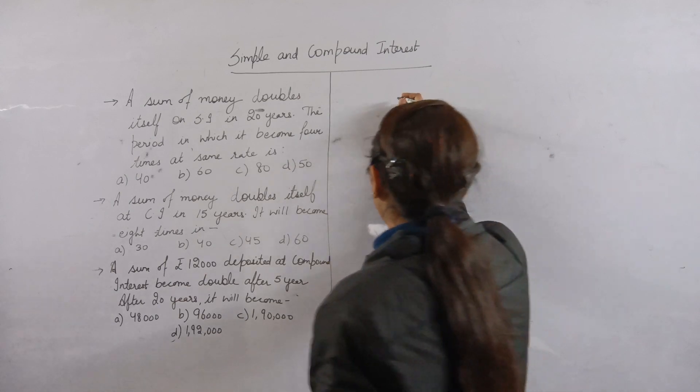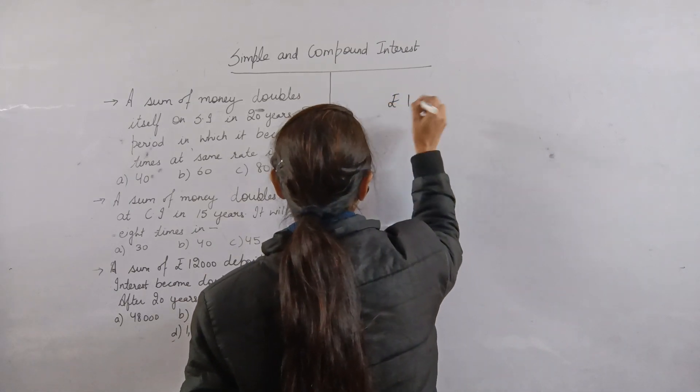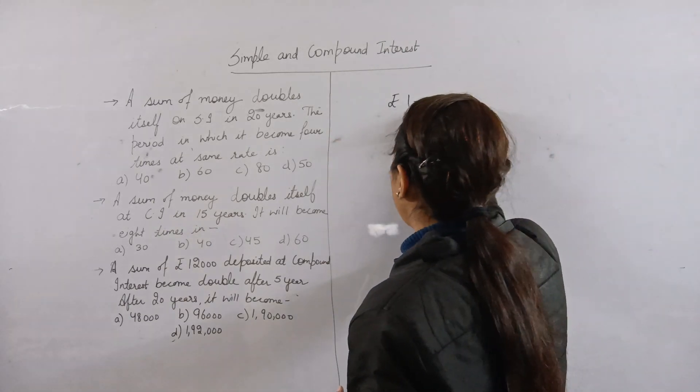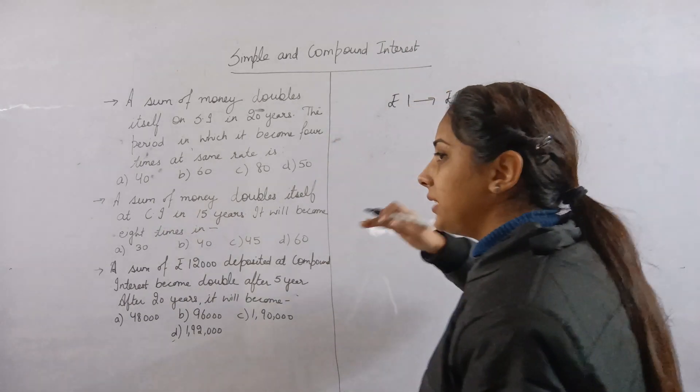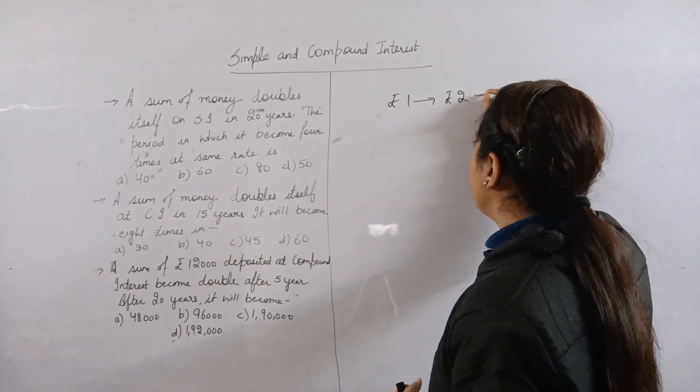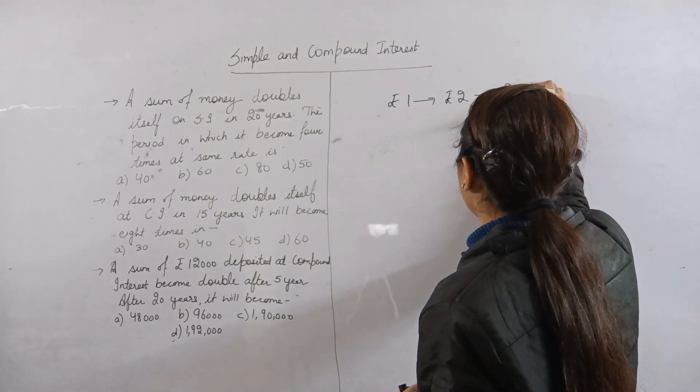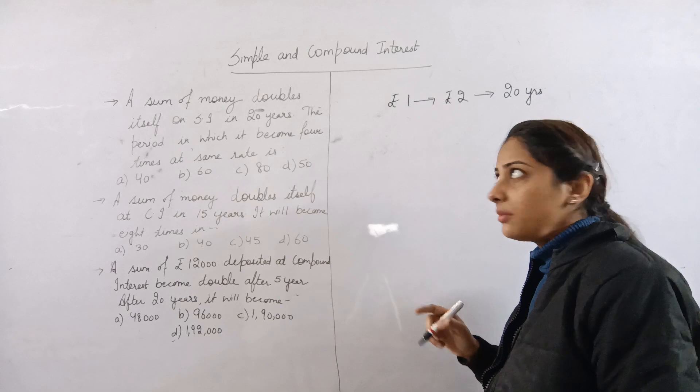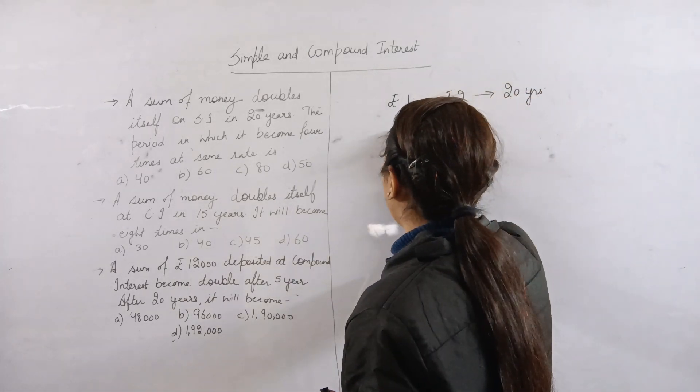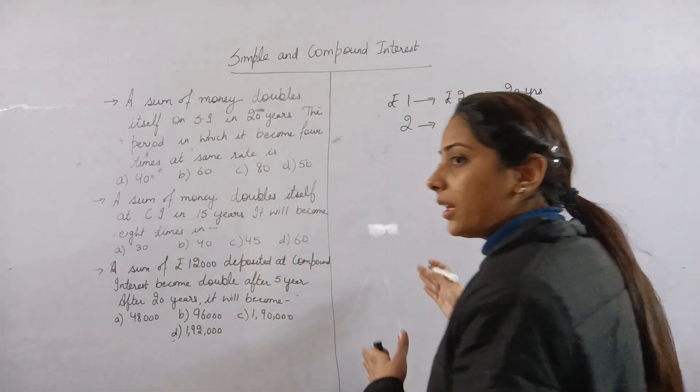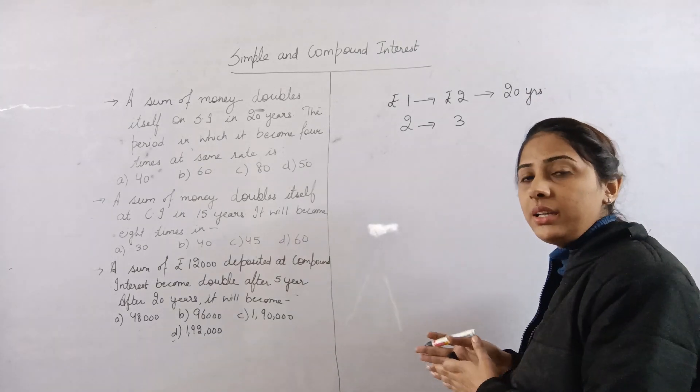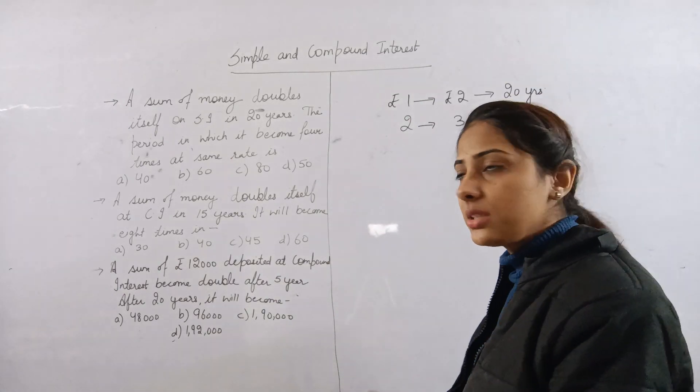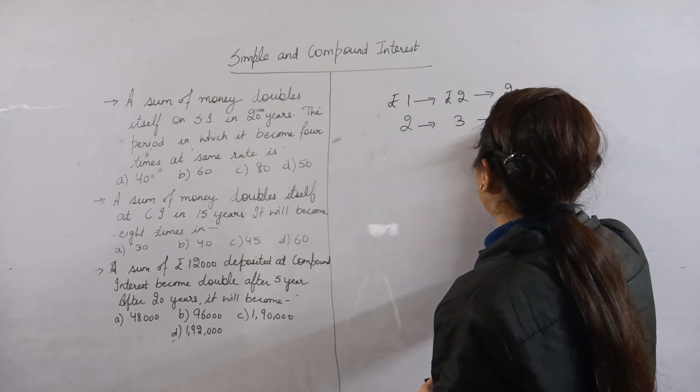If the amount doubles at the same rate, it becomes 2 rupees within 20 years. Just remember, it will double. Now you need to find when it becomes 4 rupees. At the same rate, if it takes 20 years to go from 1 to 2 rupees, the interest added is 1 rupee.